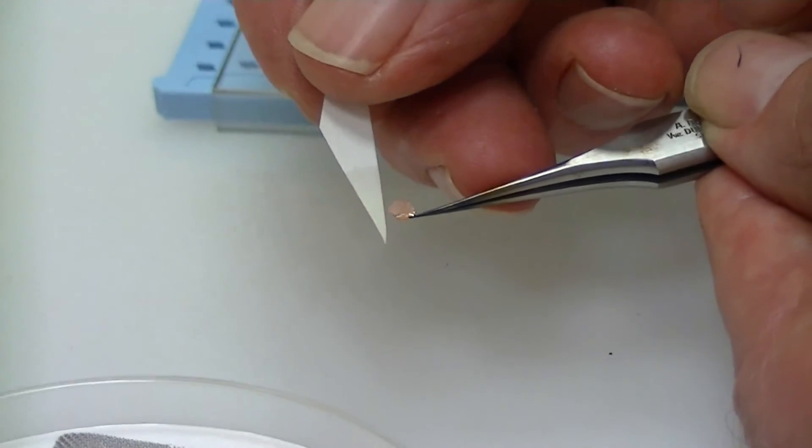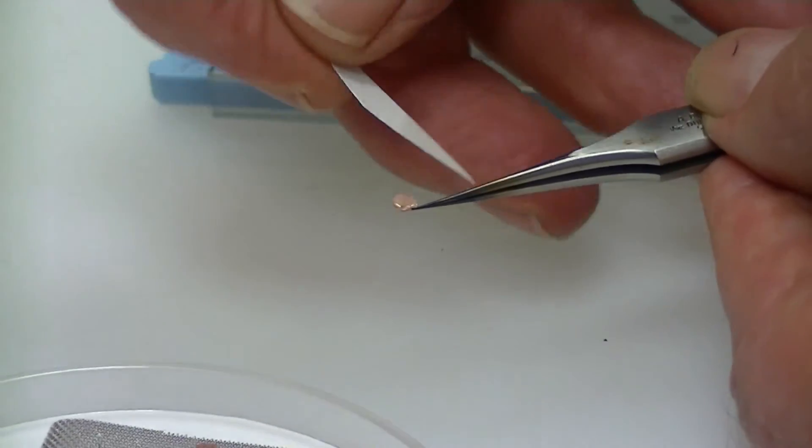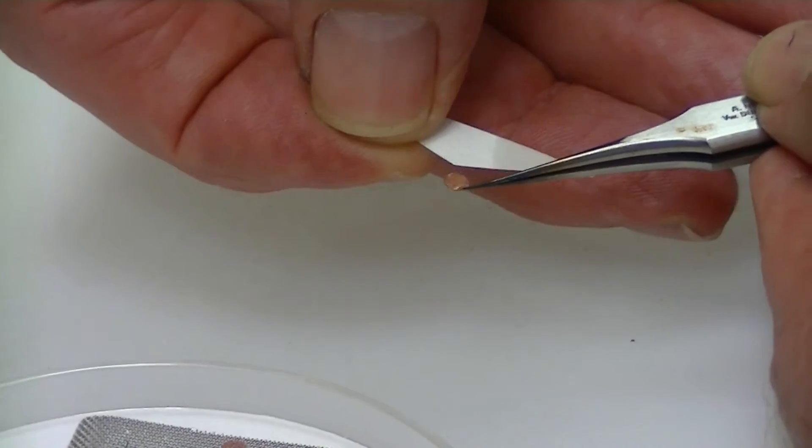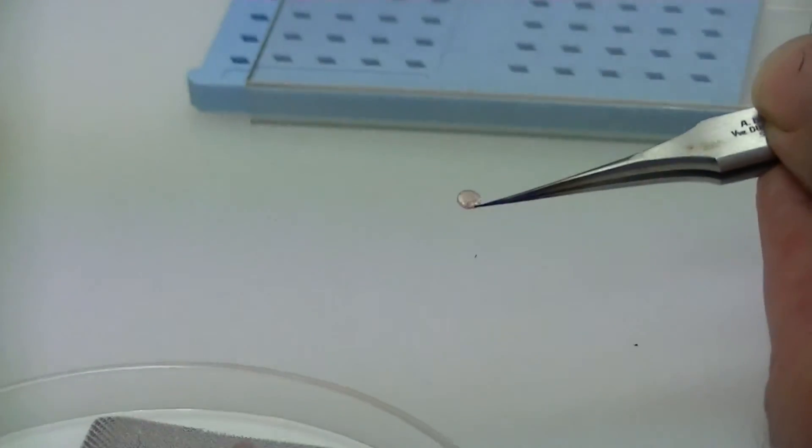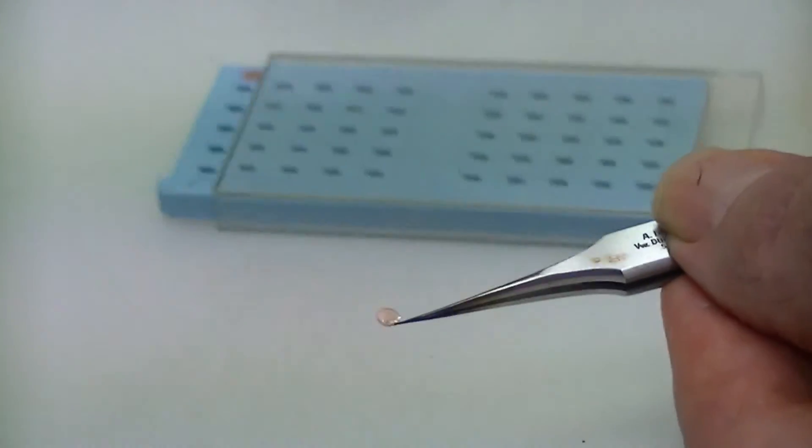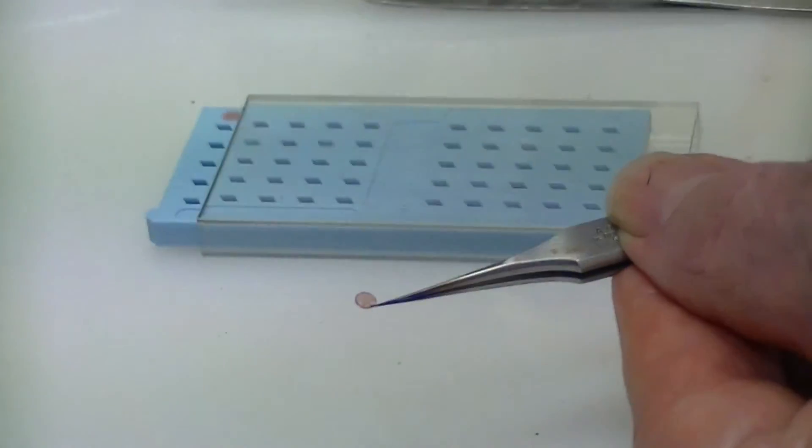When the stain dries down, it will surround the virus particles and they will appear clear against a dark background. So many of the virus particles that you see in lectures on electron micrographs have been stained in this way.